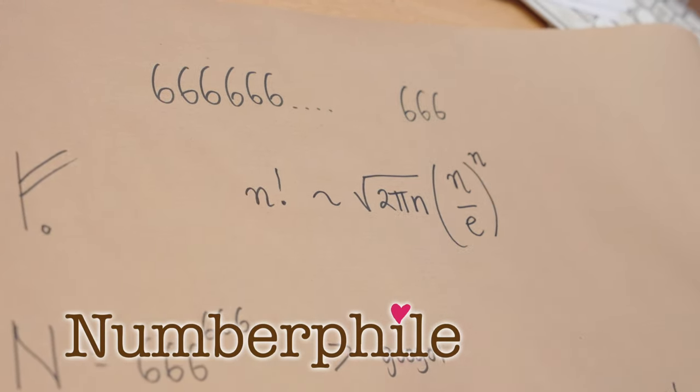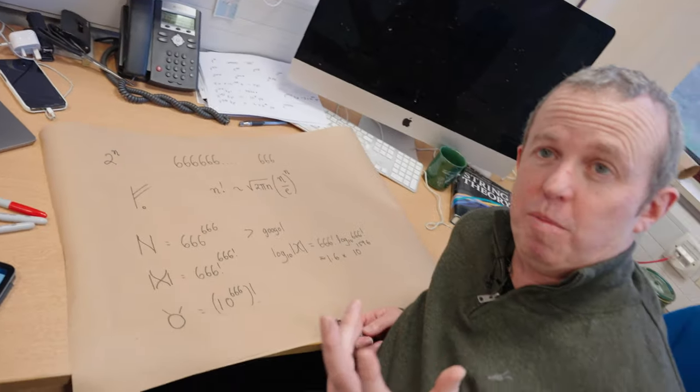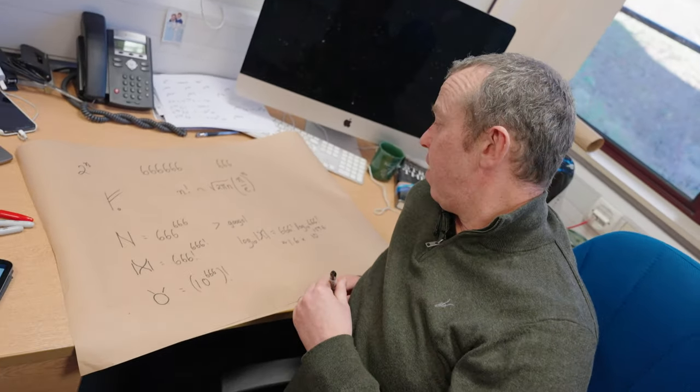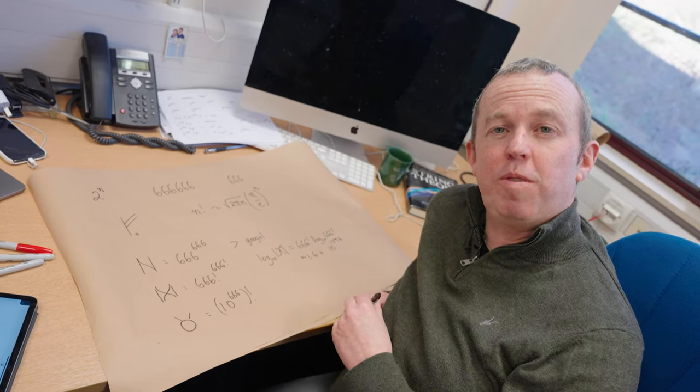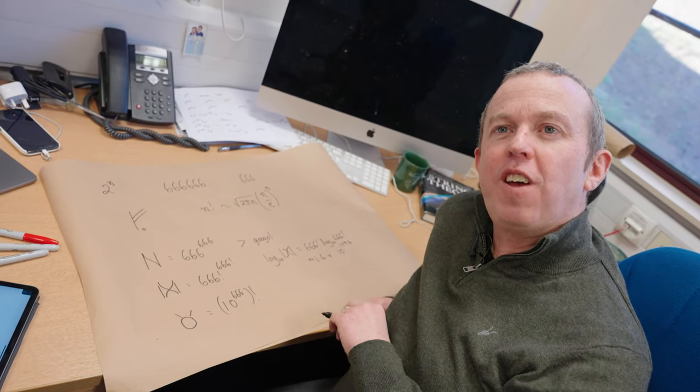This approximation is due to a guy called James Stirling, who's a mathematician born in the 17th century — a Scottish mathematician with quite an interesting life.